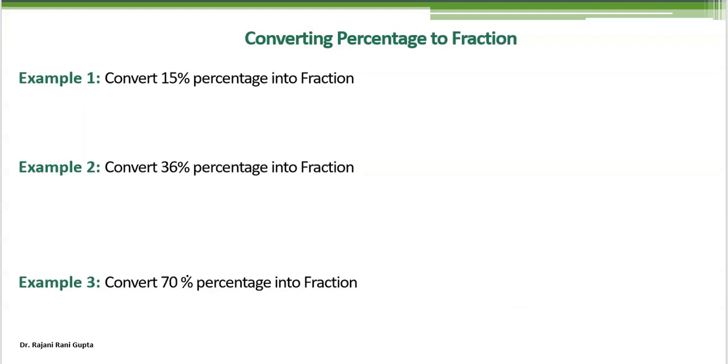Now, let's see how to convert percentage into fractions. Fraction means it can be in the form of 2 by 3, 4 by 5, something like that. So now we have 15 percent. Again, percentage we have to convert into fraction. So first step will remain same. We write 15% as 15 over 100. This is also a fraction, but we always convert it into the lowest form.